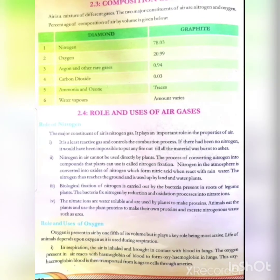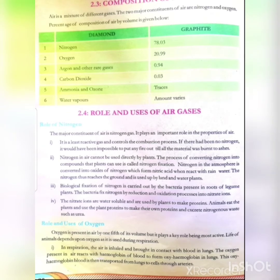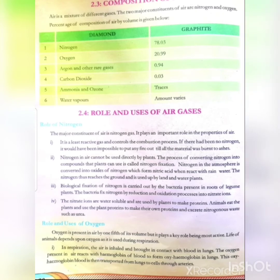Some bacteria are very useful and helpful. There are plant-friendly bacteria which are in the roots of leguminous plants. The leguminous plants are those which form beans — such as peas, aloe, and peanuts. These leguminous plants help us in the biological fixation of nitrogen. The bacteria fix nitrogen by reduction and oxidation processes into nitrate ions.